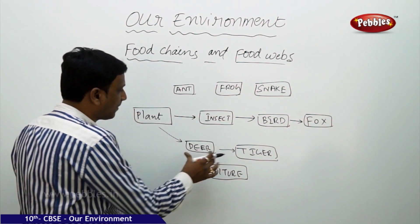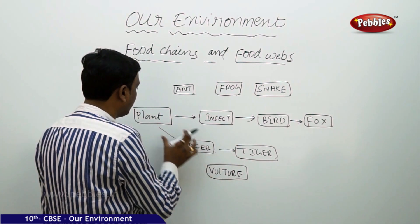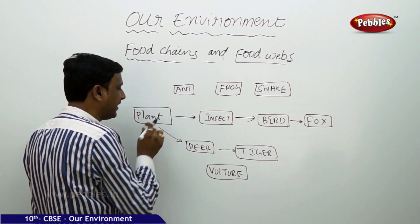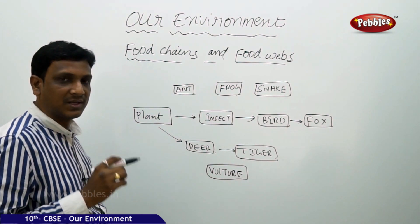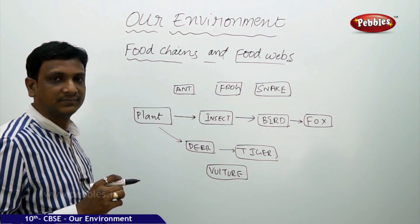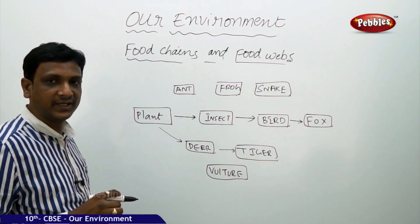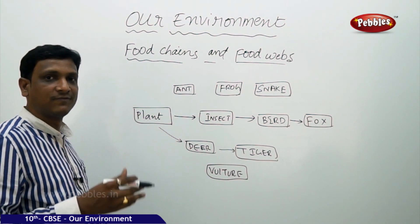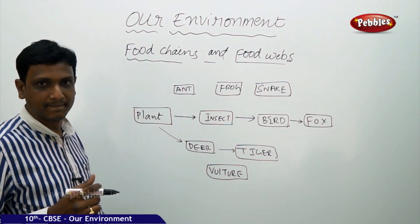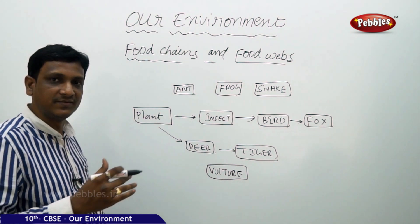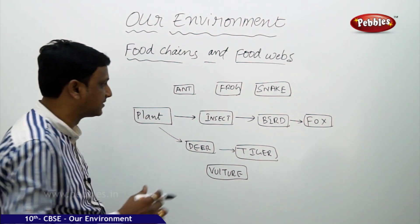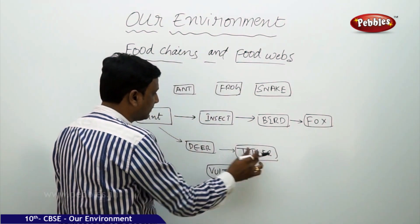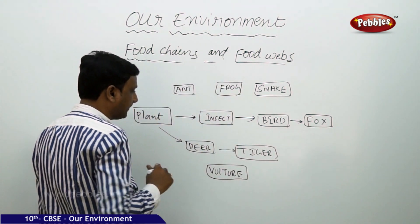But here both these chains are linked together. You see one organism is common — plant is common. That means some organisms are not only a part of one food chain, they are part of more than one food chain. So it forms links between different food chains. This is one food chain, this is one food chain, and both are linked here by plant.